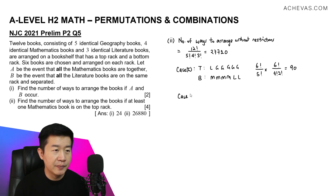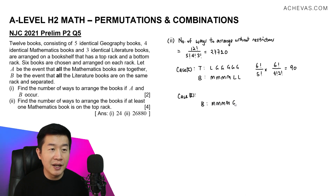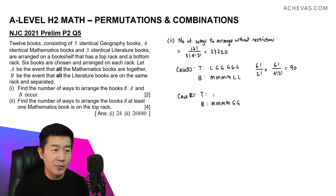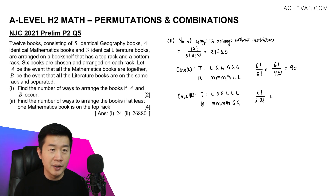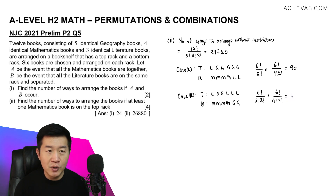Case 2: all four math books are again in the bottom rack, with the two remaining bottom spaces occupied by geography books. For the top rack, three geography books remain (since two are in the bottom), plus all three literature books. Top rack: 6 factorial divided by 3 factorial (three geography) divided by 3 factorial (three literature — but this should be 2 factorial as noted). Bottom rack: 6 factorial divided by 4 factorial (math) divided by 2 factorial (geography). This equals 300.